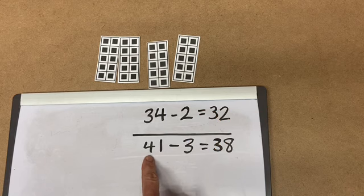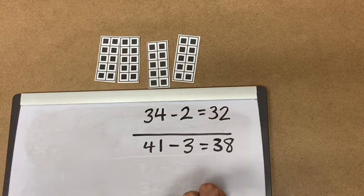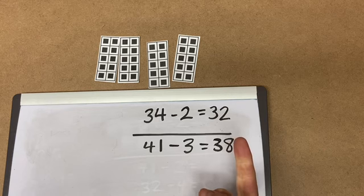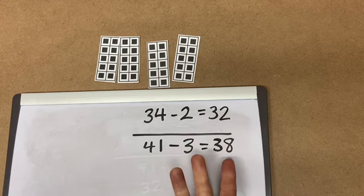If we use 41, we put 41 in our hand, and we take away 3, counting down by 1s. 40, 39, 38.